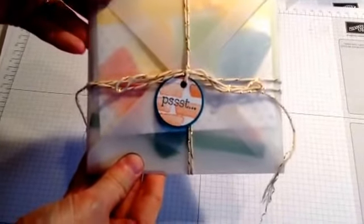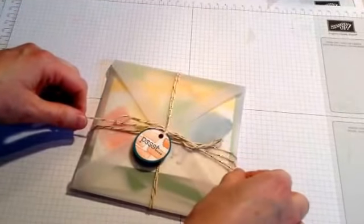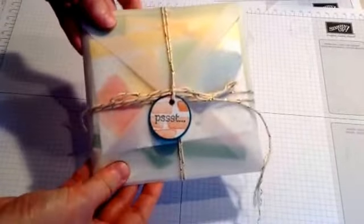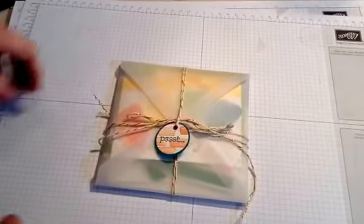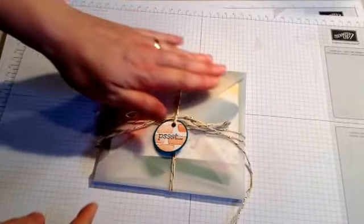There you have your finished little parcel. Super quick and easy. Just clip off the ends of your twine and it's ready to go. You can see the beautiful colors through it, which is great, so when they open it up, whatever's inside will just pop right out.